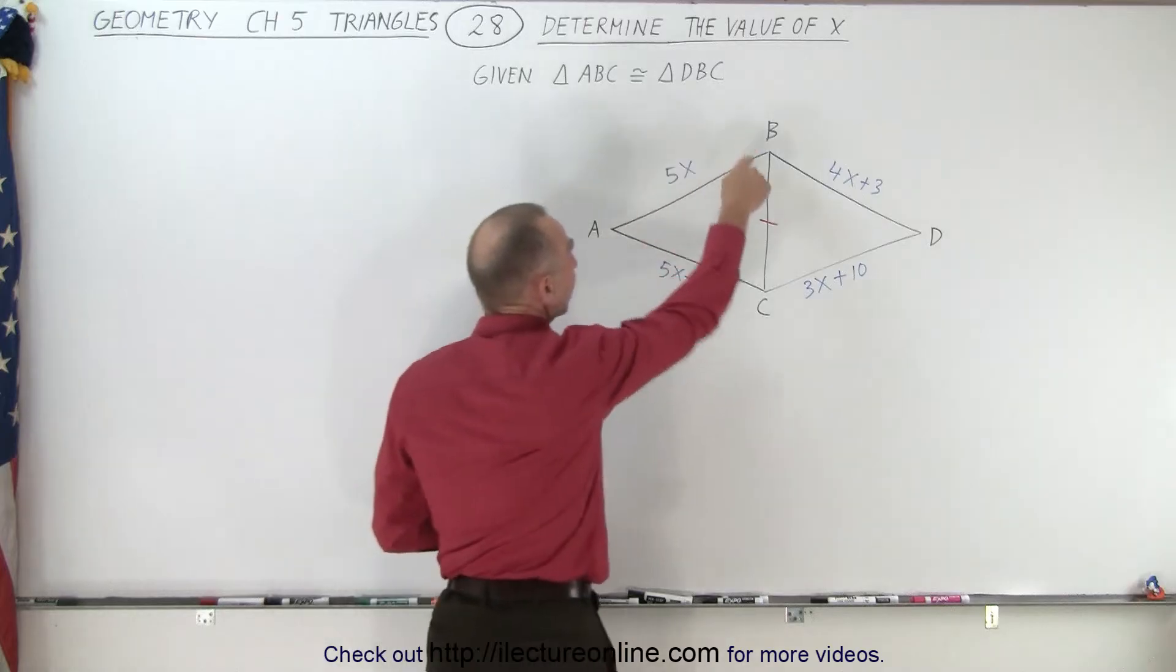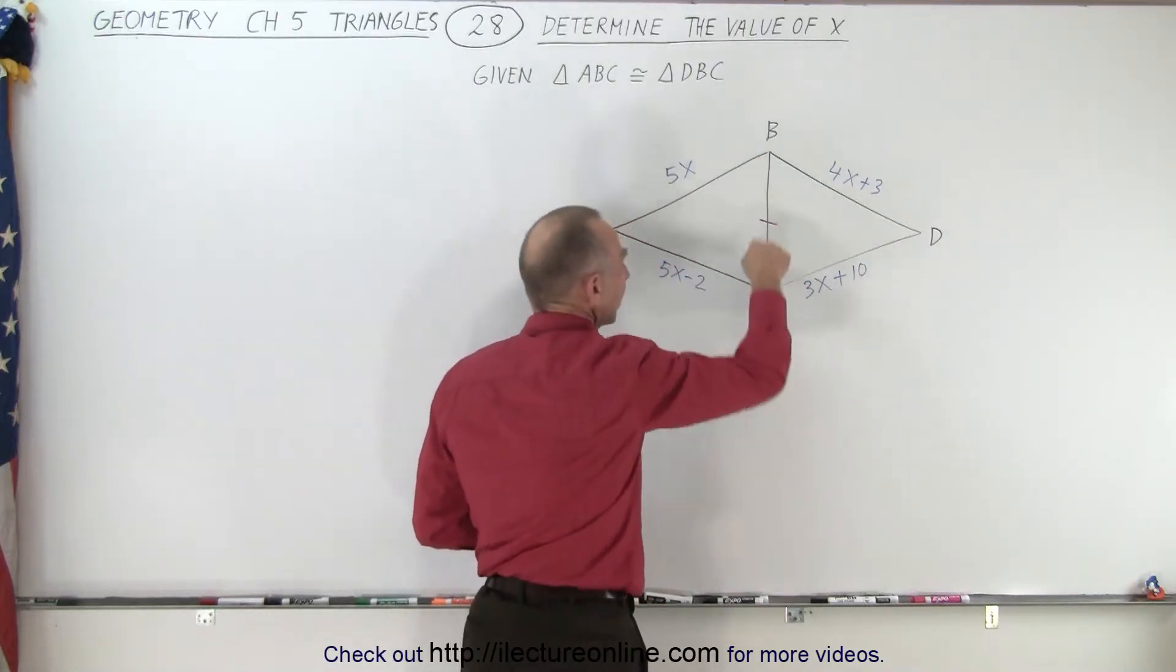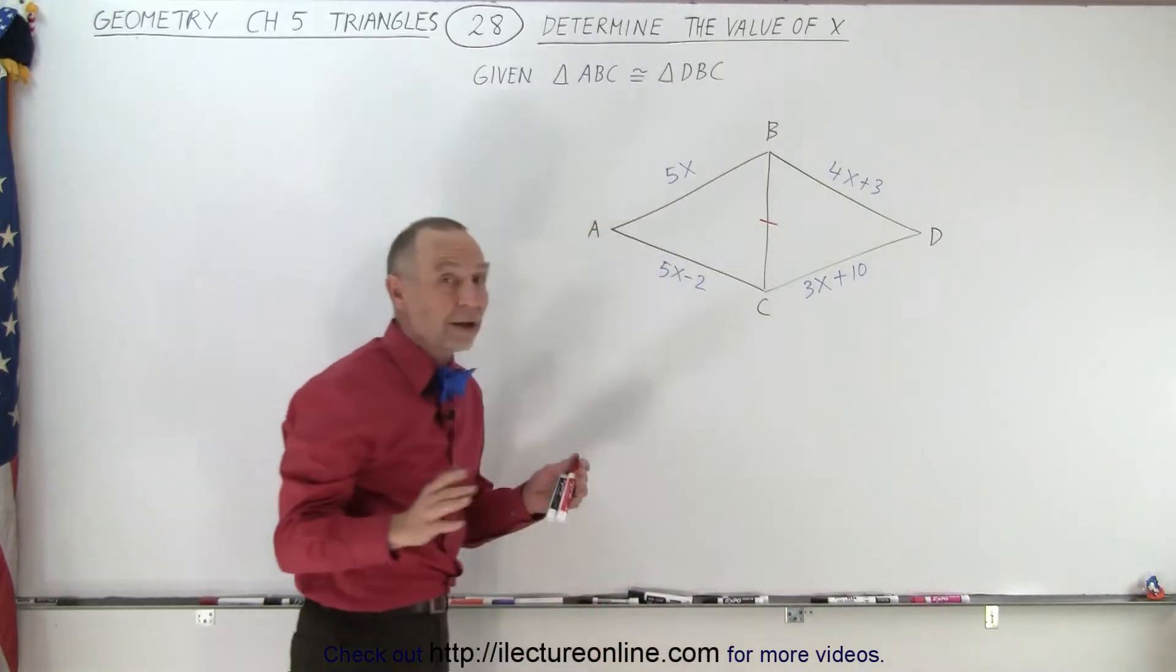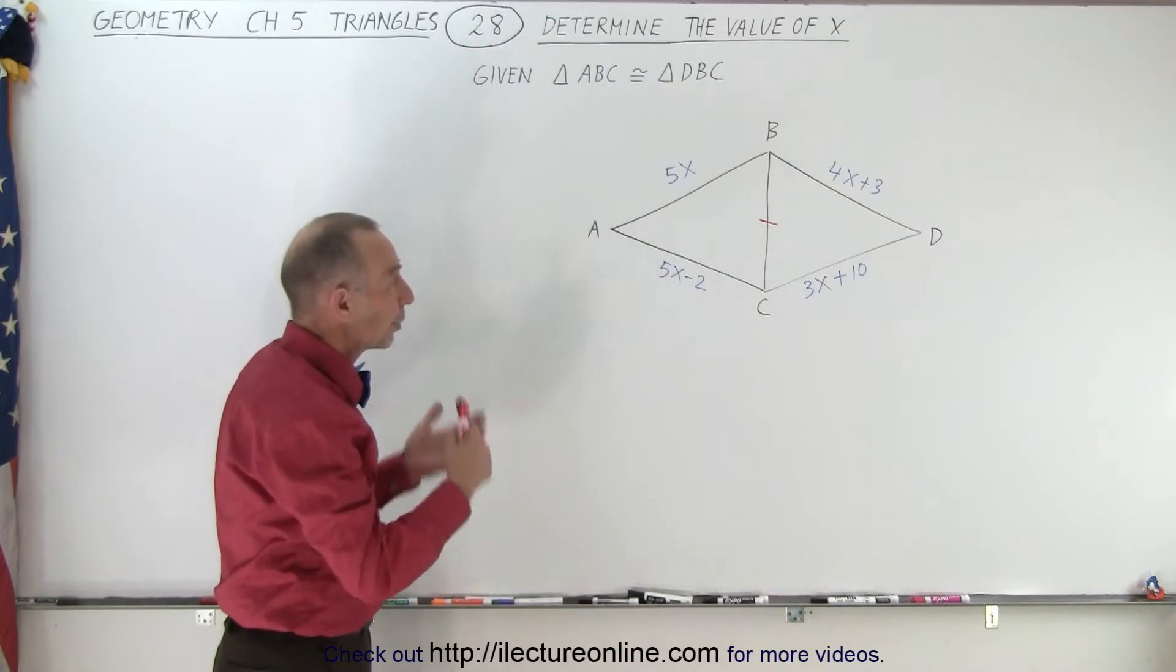So you can see that triangle ABC is congruent to triangle DBC. And notice that they share a common side. So obviously that side must be common, must have the same length for both triangles.